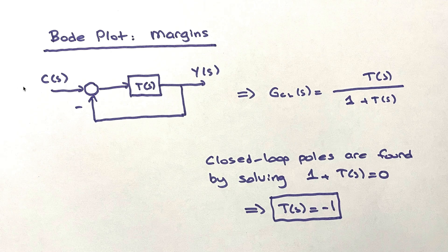I'm going to talk about Bode plots, in particular stability margins. When you design a control system, it is important to understand its stability or robustness with regard to plant perturbations. For example, the mass of the system can change, and even in electrical systems, resistors and capacitors are subject to upper and lower bounds. So you need to see how far you are from making your system unstable with respect to plant changes. For this reason, we look at Bode plots, in particular stability margins.